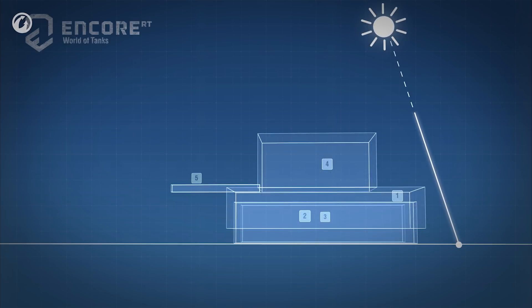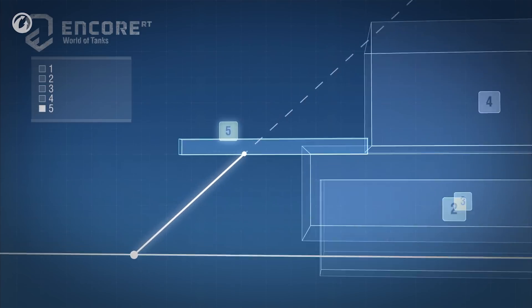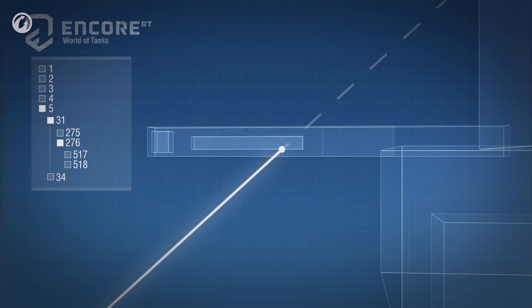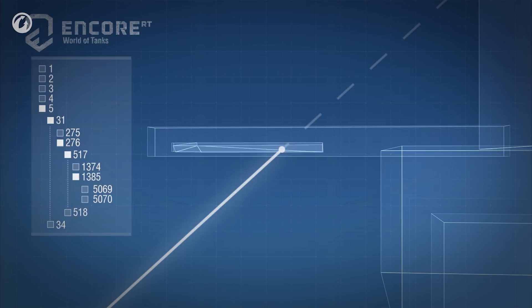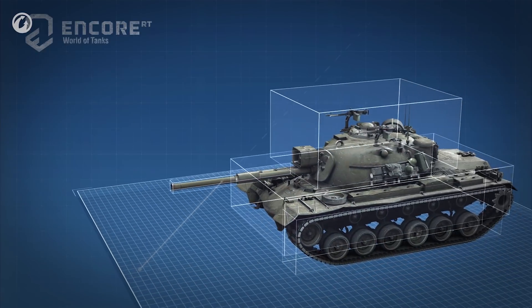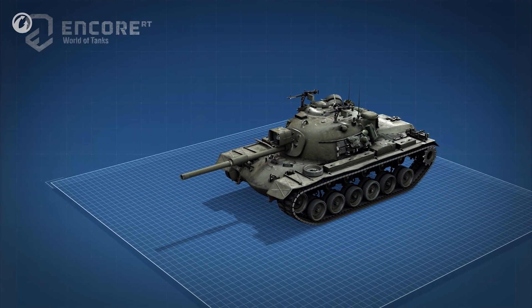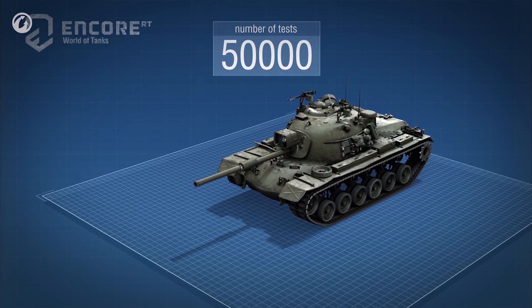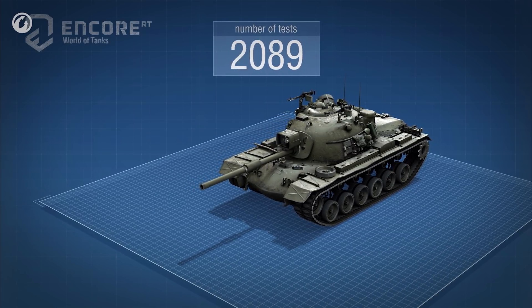In case the ray doesn't intersect with any box, there won't be a shadow from the vehicle in the selected surface point. If it does, the graphics card checks which of the two boxes the ray intersects with, and it does so until the ray intersects with the smallest box. After that, the graphics card goes through all triangles from that box and finds out the exact triangle the ray intersects with. Then the correct shadow will be rendered in the selected spot. Thanks to this box structure, the number of intersection checks is reduced from 50,000 to several dozen for one tank.